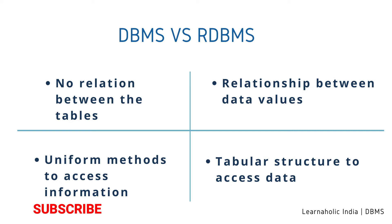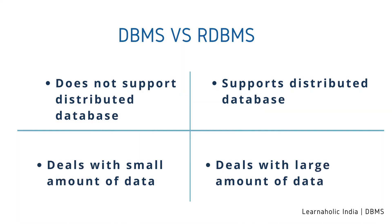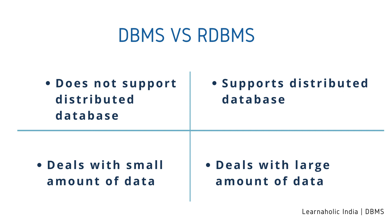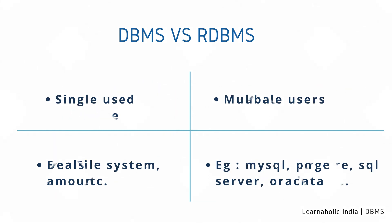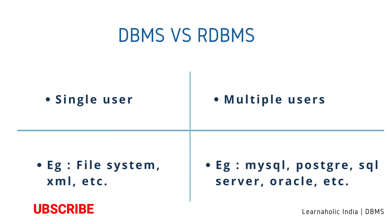DBMS has to provide some uniform methods to access the stored information, whereas RDBMS supports a tabular structure of the data and relationships between them to access stored information. DBMS does not support distributed database, whereas RDBMS supports distributed database. DBMS is meant for small organizations and deals with small data, whereas RDBMS is designed to handle large amounts of data. DBMS supports single user, whereas RDBMS supports multiple users. Examples of DBMS are file systems, XML, etc. Examples of RDBMS are MySQL, PostgreSQL, SQL Server, Oracle, etc.